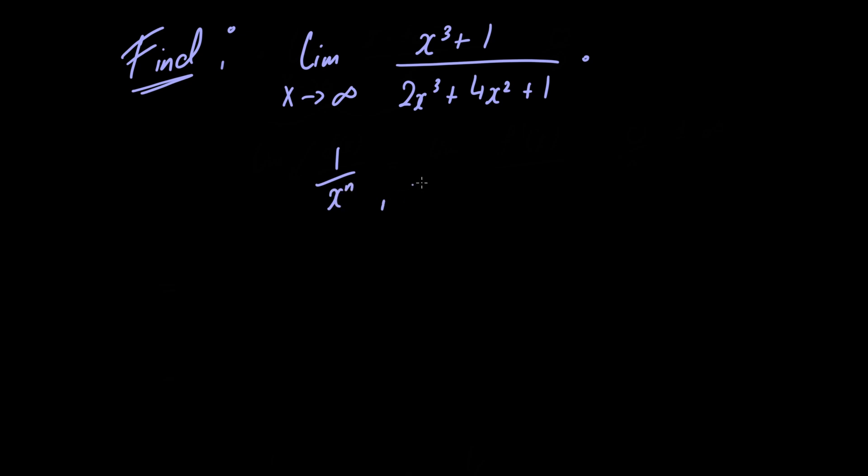If you have a limit of the form x raised to n, where n is a natural number, then as x goes to infinity, 1 over x raised to n tends to zero. So it makes evaluating this limit really easy.